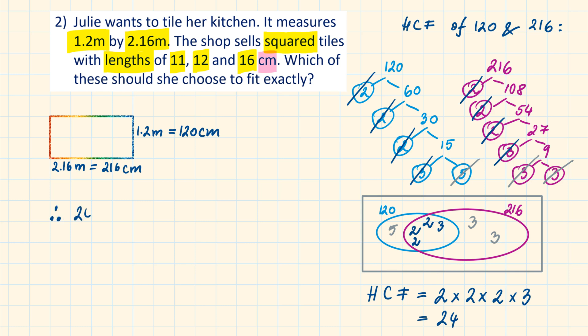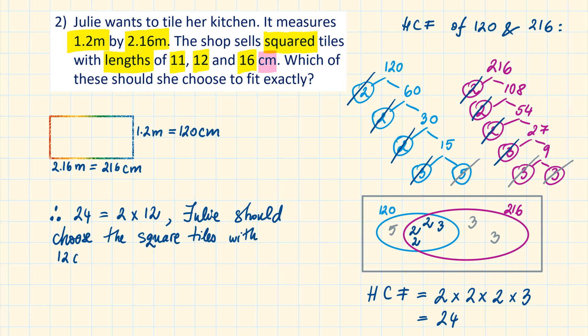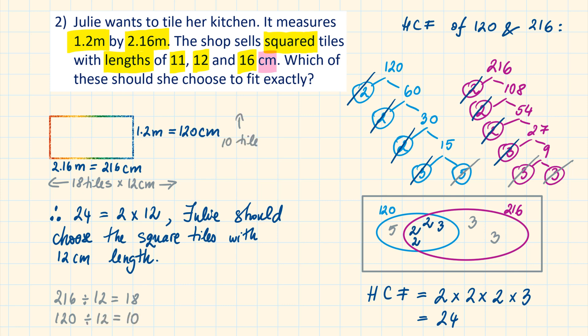Since 24 equals 2 × 12, Julie should choose the square tiles with 12 cm length. To check: divide both dimensions by 12. 216 ÷ 12 = 18, which is a whole number, so it fits exactly. 120 ÷ 12 = 10, also a whole number, so it fits. The answer is the 12 cm tiles.